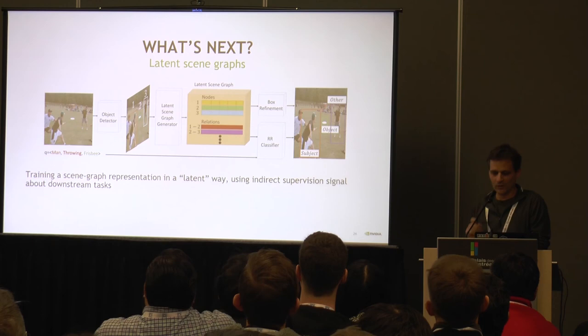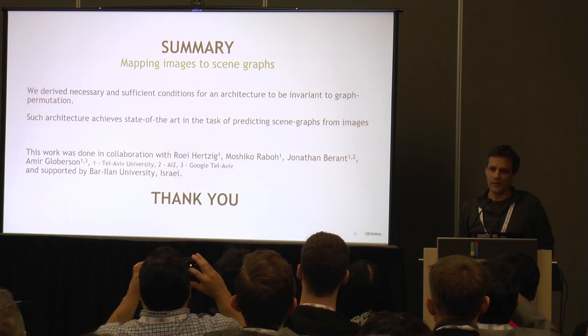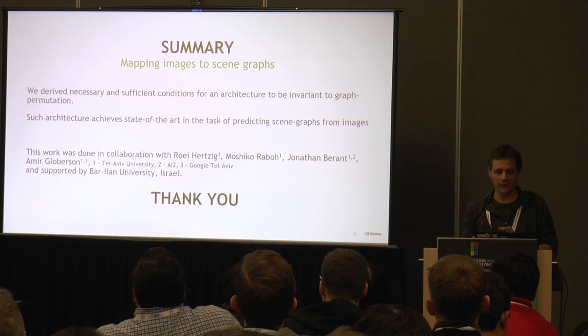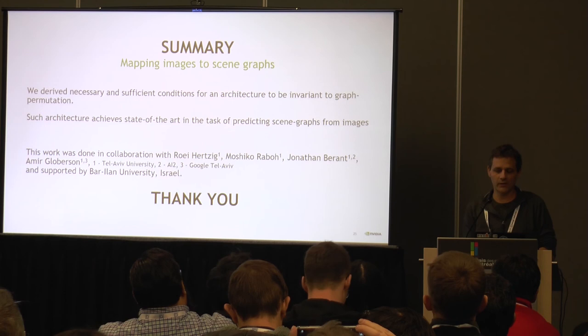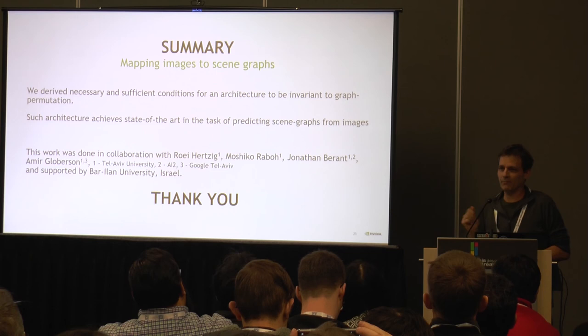To summarize: we derived necessary and sufficient conditions for architectures to be invariant to graph permutations of input and output. We showed that this architecture, when applied to the task of predicting scene graphs from images, achieves state-of-the-art performance. This work was done in collaboration with my colleagues at Tel Aviv University and Bar-Ilan University in Israel. Thank you so much.